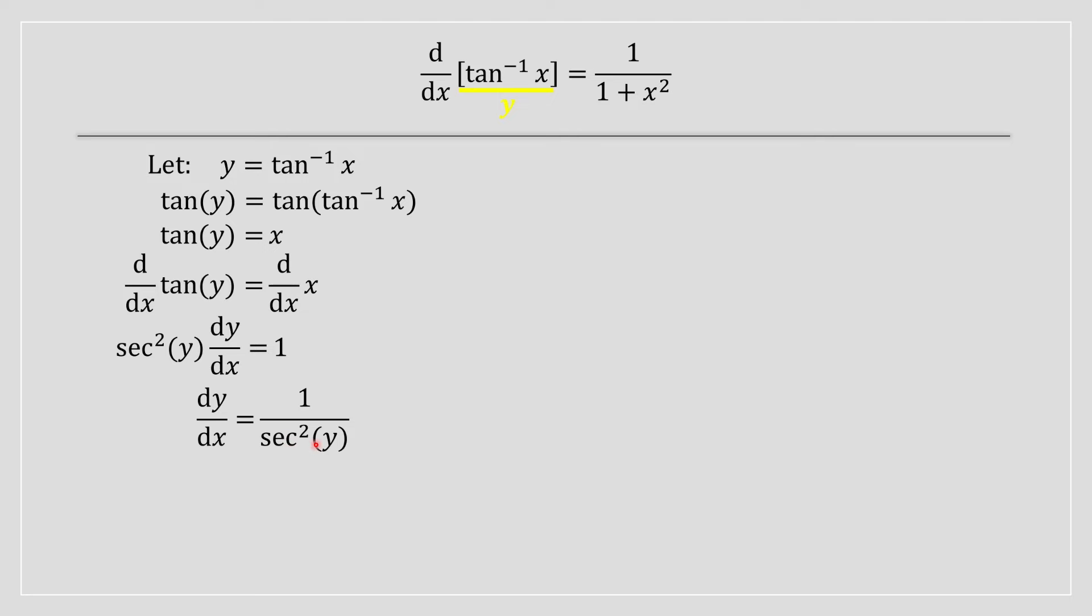We know that secant squared of x equals 1 plus tan squared of x. If we replace the term with y, we substitute 1 plus tan squared of y into this equation.